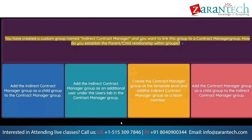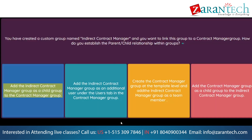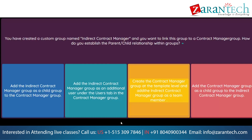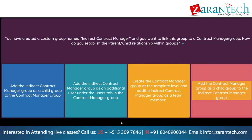Question: You have created a custom group named Indirect Contract Manager and you want to link this group to a contract manager group. How do you establish the parent-child relationship within groups? Option 1: Add the Indirect Contract Manager group as a child group to the contract manager group. Option 2: Add the Indirect Contract Manager group as an additional user under the Users tab in the Contract Manager group. Option 3: Create the Contract Manager group at the template level and add the Indirect Contract Manager group as a team member. Option 4: Add the Contract Manager group as a child group to the Indirect Contract Manager group.